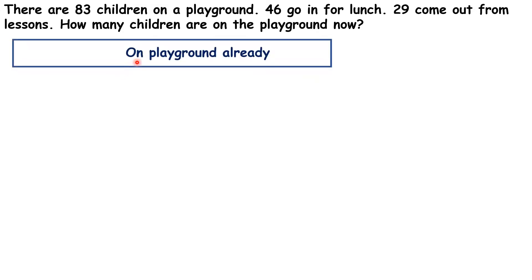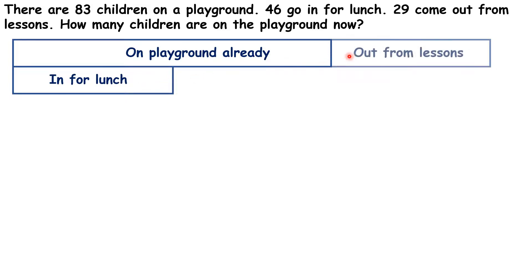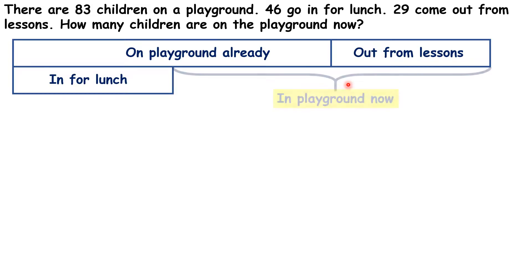So we know the number of children who were on the playground already. We know how many went in for lunch. We know how many came out from lessons. And we need to work out how many children are in the playground now.